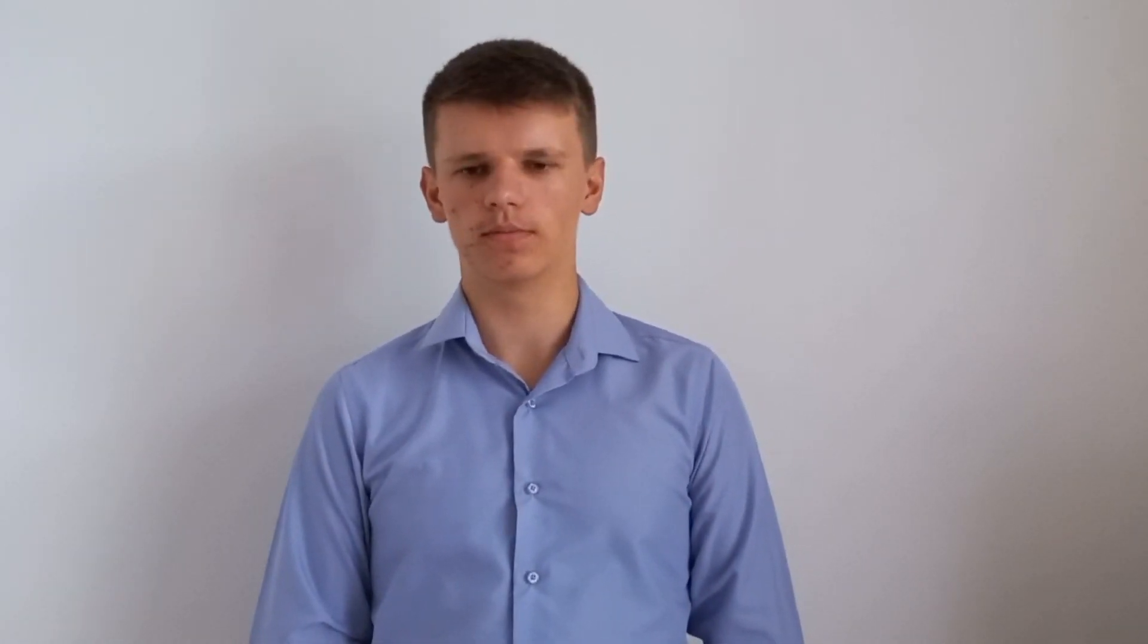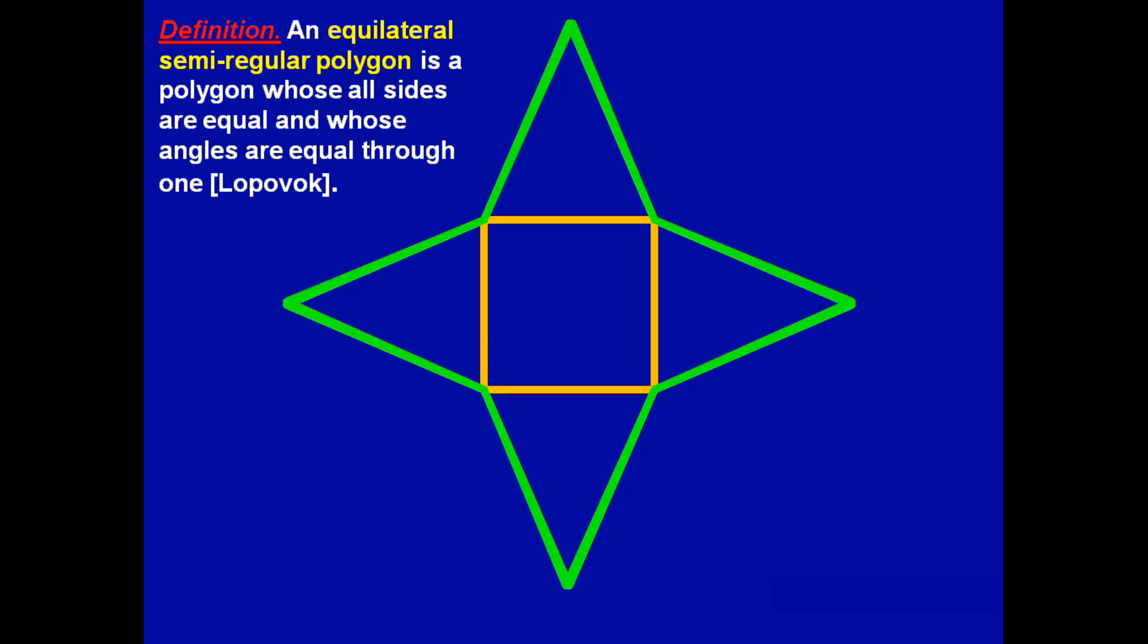First, an equilateral semi-regular polygon. Imagine that we have a square and add isosceles triangles to each side. Then the polygon will have equal sides and its angles will be equal through one. So, an equilateral semi-regular polygon is a polygon whose all sides are equal and whose angles are equal through one.